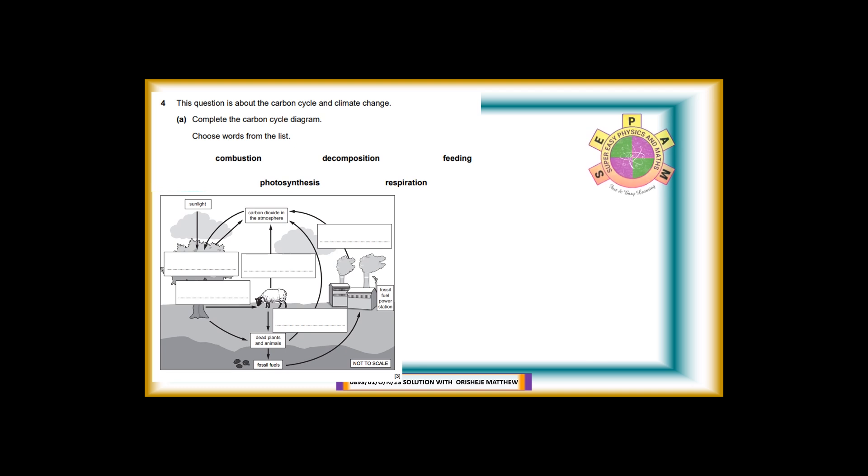Question 4. This question is about the carbon cycle and climate change. 4a: Complete the carbon cycle diagram. Choose words from the list: Combustion, decomposition, feeding, photosynthesis, and respiration. Answer: Photosynthesis - plants capture sunlight to turn air and water into food. Feeding - animals eat plants and other animals, taking in carbon for energy. Respiration - plants and animals release carbon dioxide back into the air as they use energy. Decomposition - dead plants and animals are broken down by decomposers, returning carbon to the soil. Combustion - burning fossil fuels releases carbon dioxide trapped for millions of years.